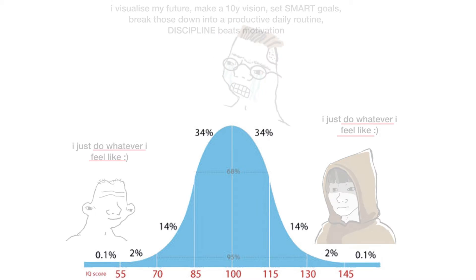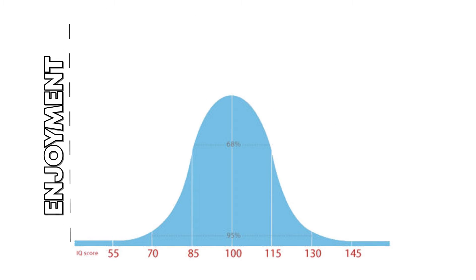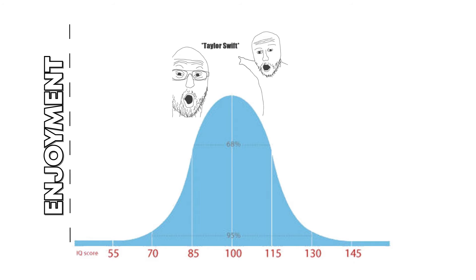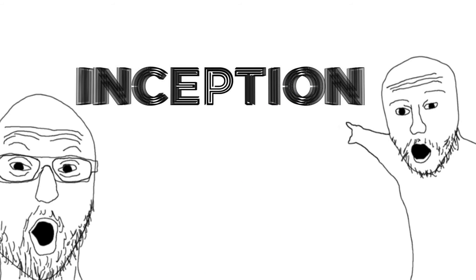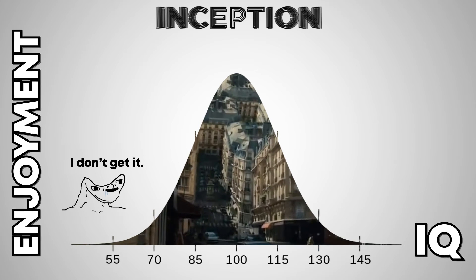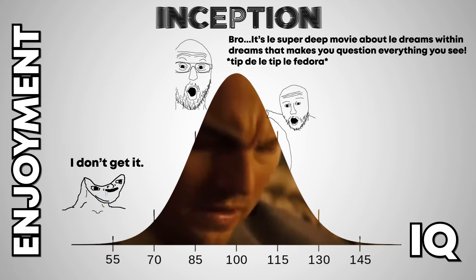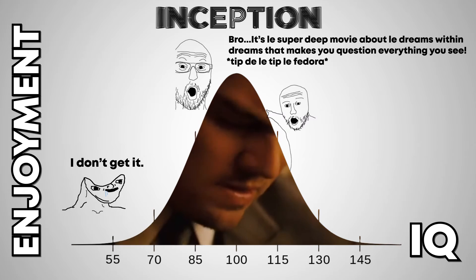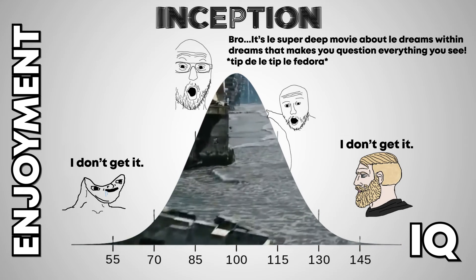An interesting thing happens when the graph's y-axis is changed from percent of people to enjoyment. Then the bell curve becomes a helpful way to identify things that are enjoyed by midwits but hated by both low IQs and high IQs. A great example of something that fits this graph is the film Inception. Low IQs don't like it because they don't get it. Midwits like it because it's a complicated movie about dreams within dreams that make you question everything you see. And high IQs don't like it because they don't get it.